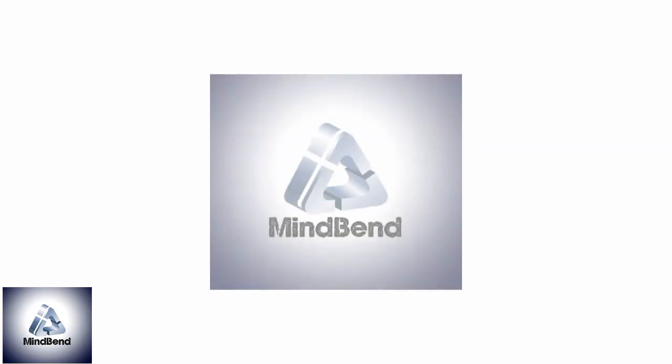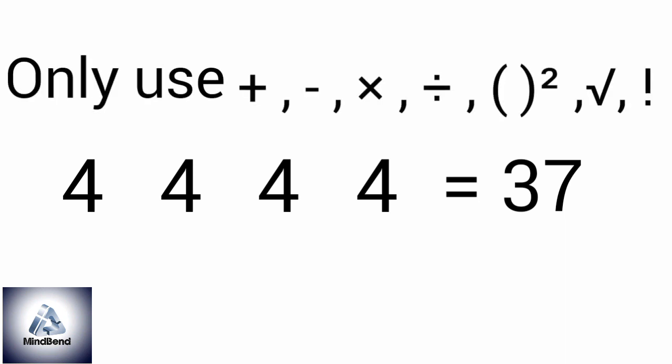Hello and welcome to my channel Mind Bent. There are four fours and we have to get a result of 37. We are only allowed to use mathematical operators like plus, minus, multiply, divide, square, square root, and factorial.